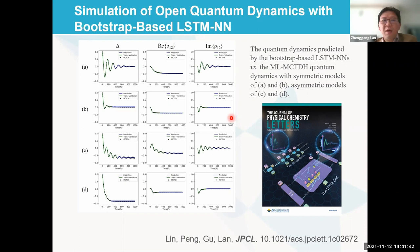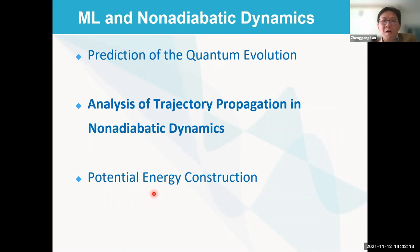For both spin-boson model symmetries, we can basically get reasonable results. This demonstrates that it is possible to use a machine learning model to propagate quantum dynamics using a suitable machine learning model. Now I will go to the second part of my talk: analysis of trajectory propagation in non-adiabatic dynamics.